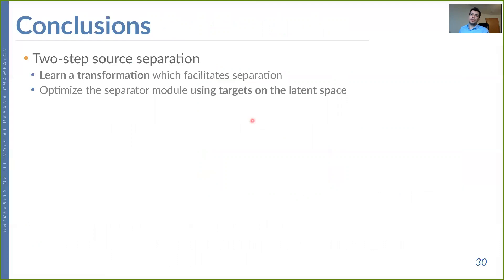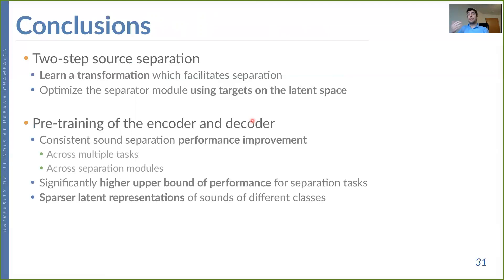In conclusion, we introduced the two-step sound separation approach: first learning a transformation that facilitates separation and extracting latent targets to train the separator module. Pre-training the encoder and decoder yields consistent sound separation performance improvement across various tasks and different separation modules. It also leads to a significantly higher upper bound of performance, as the ideal latent targets score much higher than the ideal binary mask in the short-time Fourier transform domain, and produces sparser latent representations for different sound classes compared to the end-to-end approach.